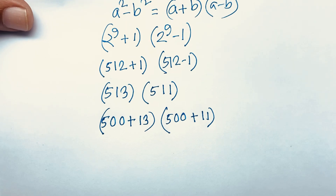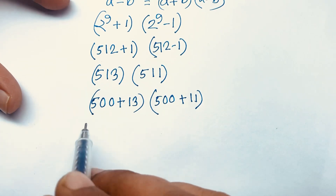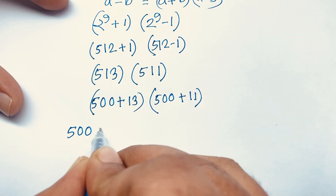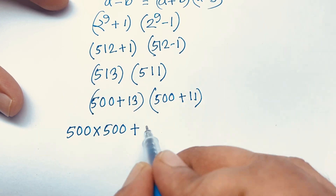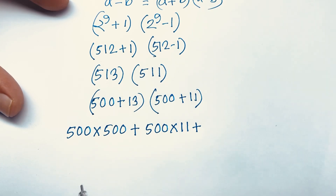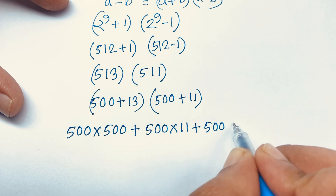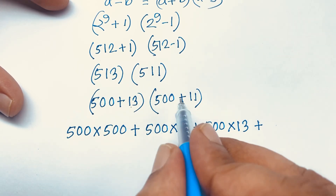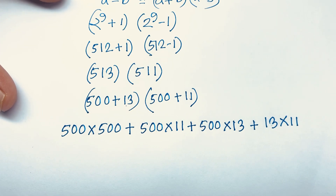Expanding (500 + 13)(500 + 11): we get 500 times 500, plus 500 times 11, plus 13 times 500, plus 13 times 11. So that is 250,000 plus 5,500 plus 6,500 plus 143.